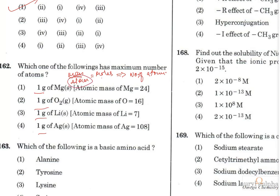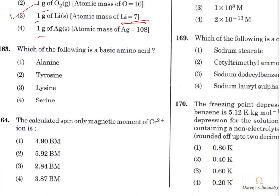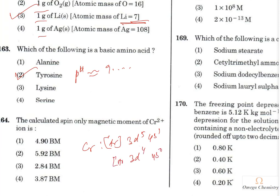Question 171: The basic amino acid among the options is tyrosine, with a pH around 9-plus. That is the correct answer. Question 172: For Cr²⁺ — chromium's ground state configuration is [Ar]3d⁵4s¹. Losing 2 electrons gives [Ar]3d⁴, meaning 4 unpaired electrons. The spin-only magnetic moment μ = √(n(n+2)) = √24 ≈ 4.9 BM, so approximately four-point-something is the right answer.